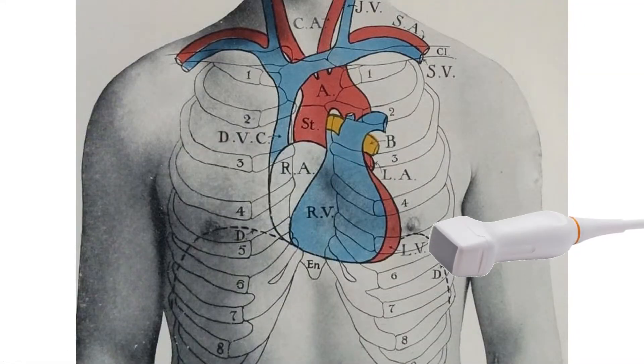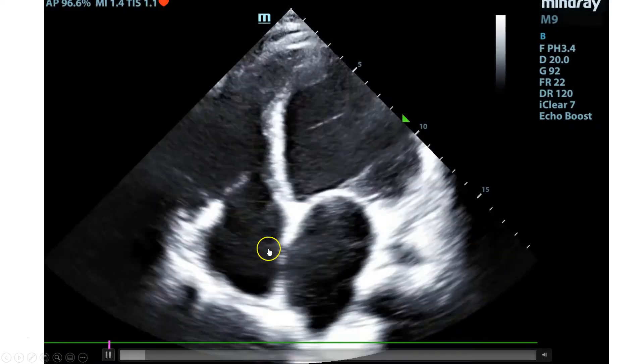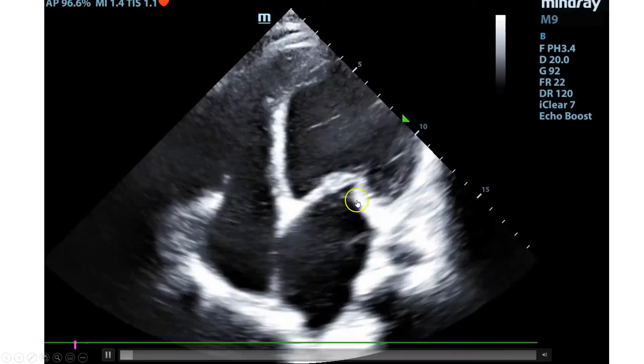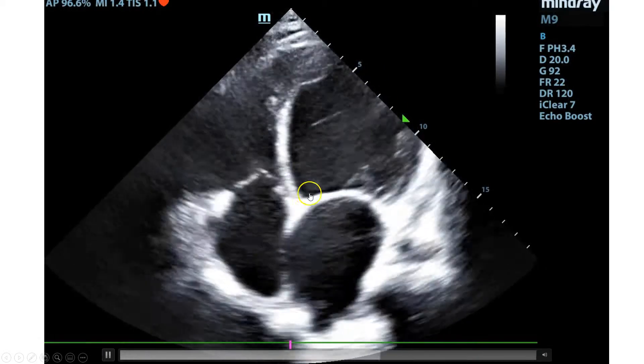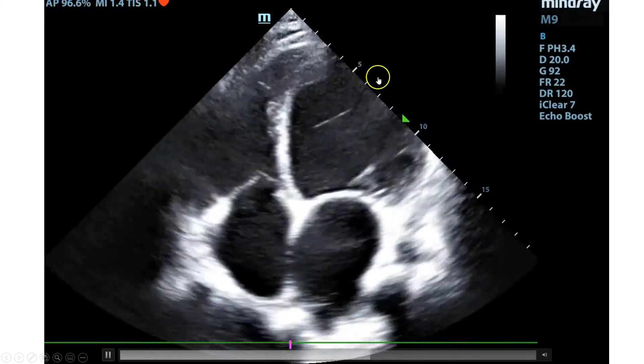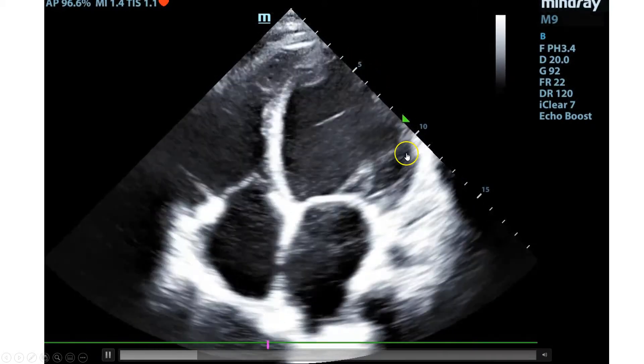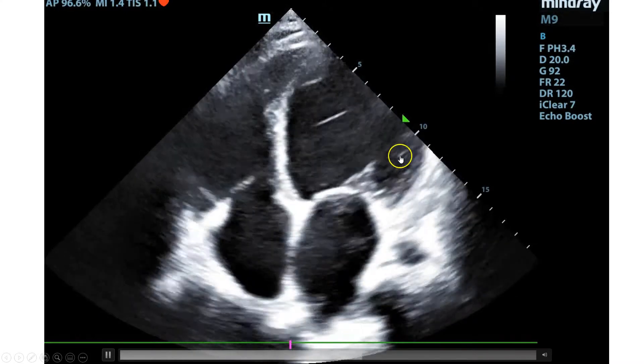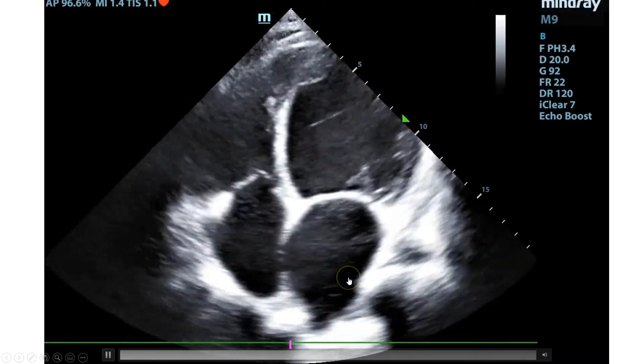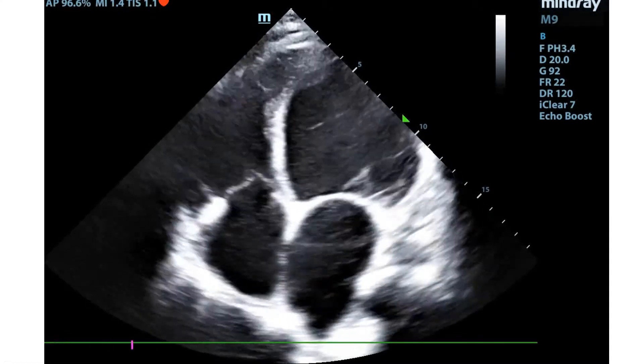Moving on to that apical view. As a reminder, you can either find the point of maximal impact or you can go under the nipple line or the intramammary crease for a woman with the probe marker pointing to the patient's right. And you will get this view. On this view, again, you see that that left ventricle is really not squeezing in this view. You see that the valve is moving somewhat, but the ventricle itself, there's almost no movement of the myocardium towards each other. The right ventricle looks reasonably sized. Then you can see the left and right atria as well. So this again in this clip would be a depressed ejection fraction.